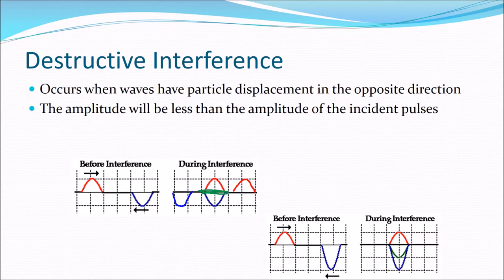What happens if two unequally sized waves interfere? For example, the red one has a positive amplitude of one and the blue one has a negative amplitude of two. Our resultant wave would have an amplitude of negative one, but if they continue on they would return to normal, keeping going in the direction they were before.